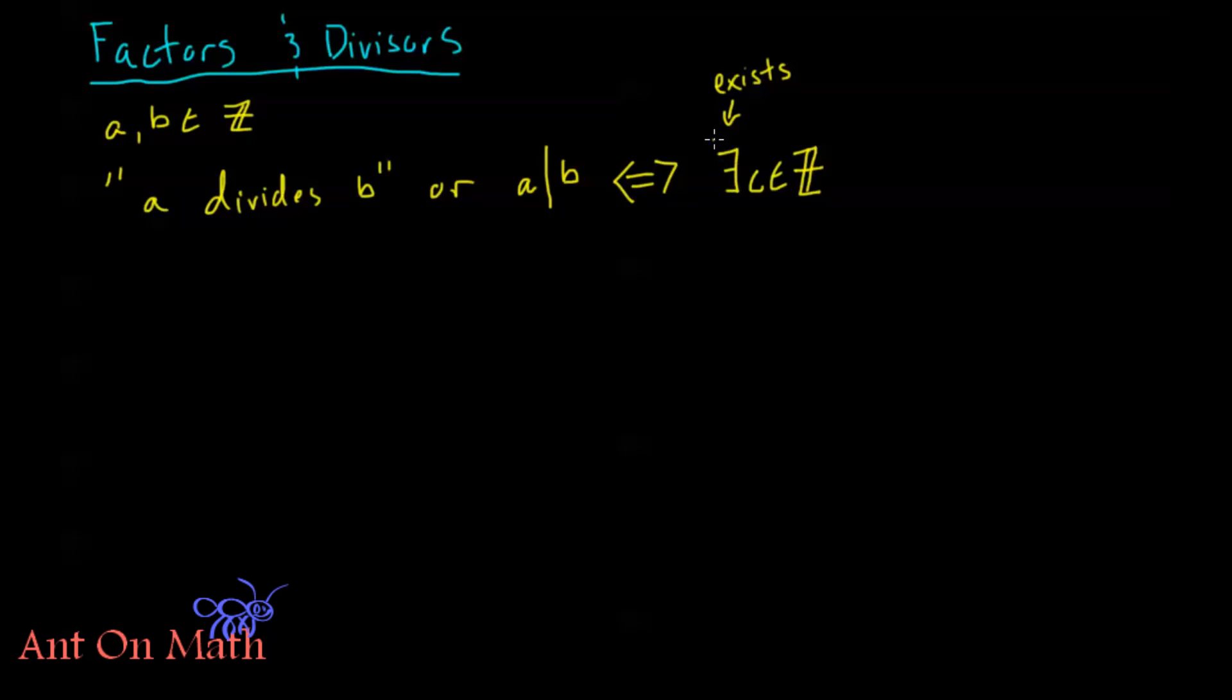So exists some integer C such that B equals A times C, right? So A divides B, or this notation A divides B, that just means that A times something else equals B.